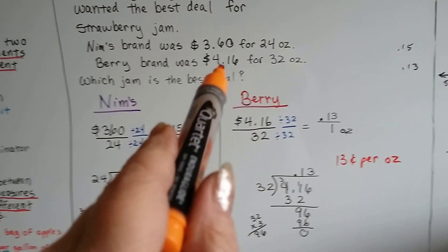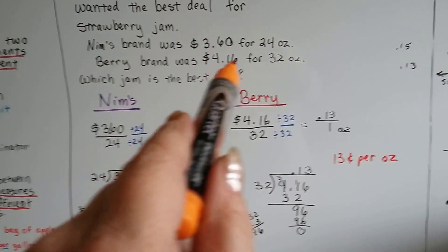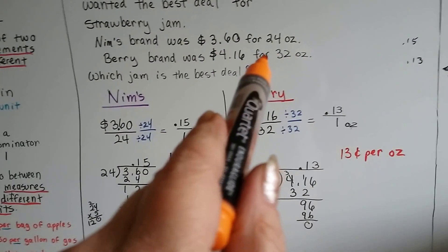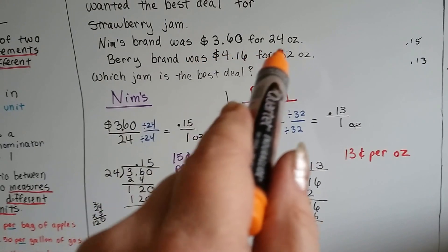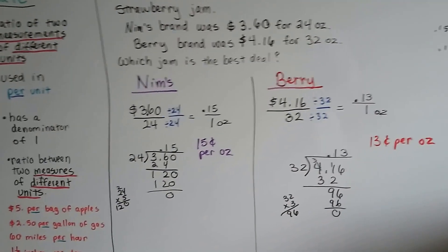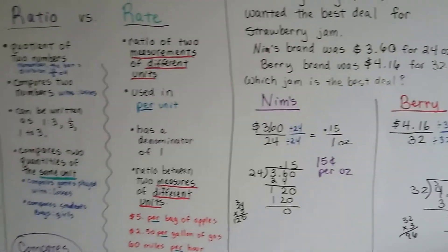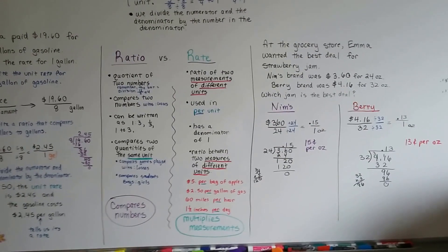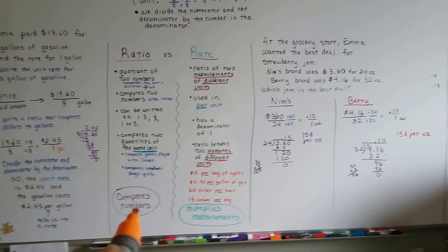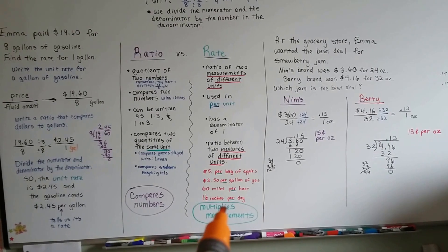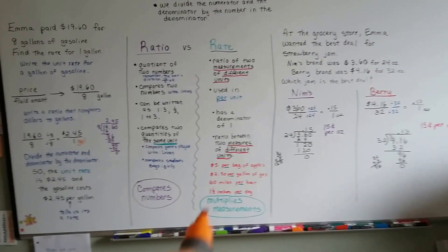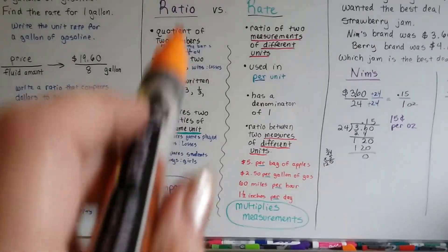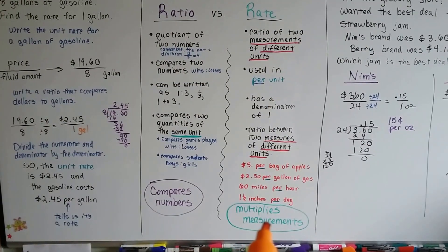She's going to get a bigger jar. Even though Berry brand costs more than $3.60, it's actually cheaper per ounce — she pays less per ounce and gets more jam for less money. So those are rates. Just remember: a ratio compares numbers, whereas a rate involves measurements. A ratio compares numbers and a rate multiplies measurements — that's the best way to tell them apart.